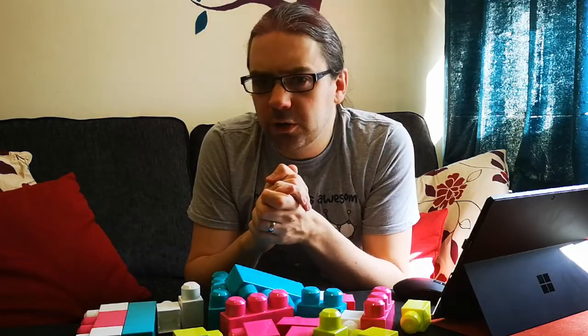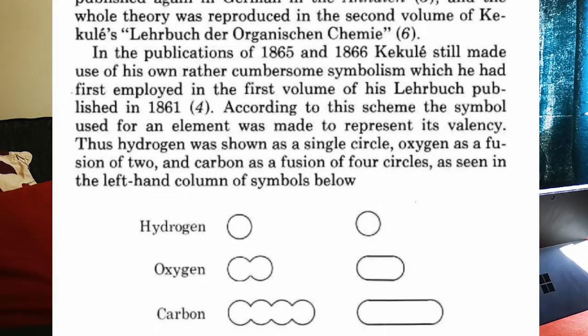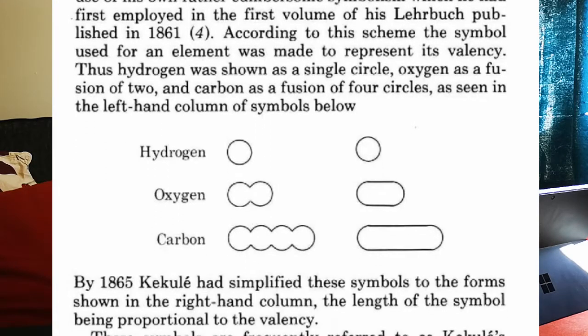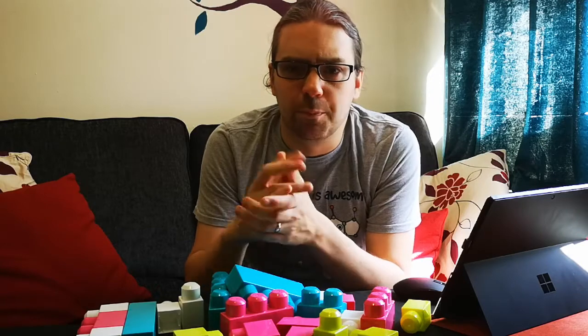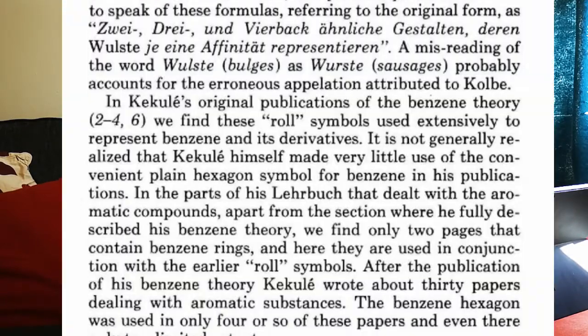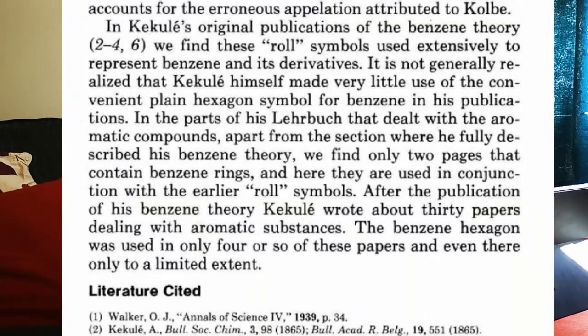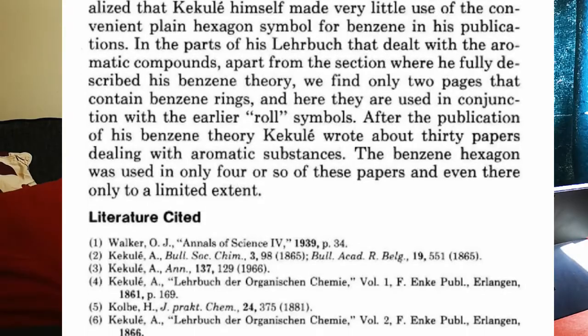These would then be drawn as long elongated sausages. Actually, according to Oswald Walker writing in J. Chem Ed back in the 1970s, they were originally called roll formulas, as in bread rolls, and the German for bead or bulge was accidentally misread as versed and translated into English as sausage.